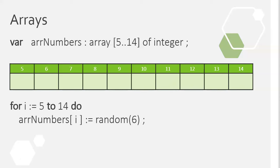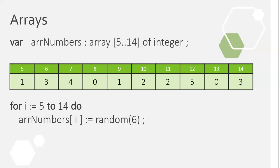We could also change the values to random(6), which gives a random number from 0 to 5. Each value in the array will be different — either 0, 1, 2, 3, 4, or 5. The for loop sets arrayNumbers[5] to a random value, then arrayNumbers[6] to a different random value, and so on. Using a for loop, we can edit a whole bunch of values in the array with just two lines of code.